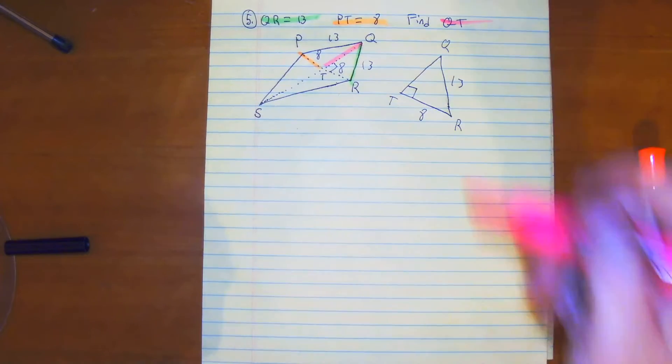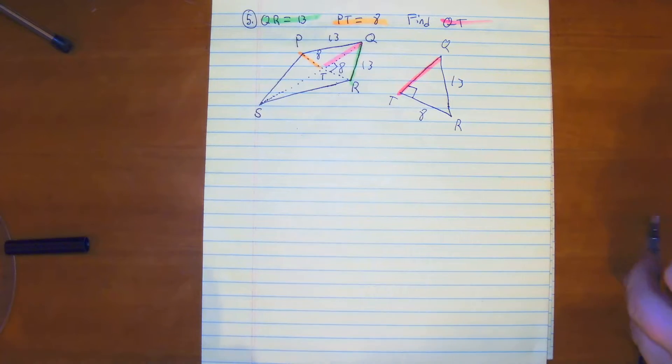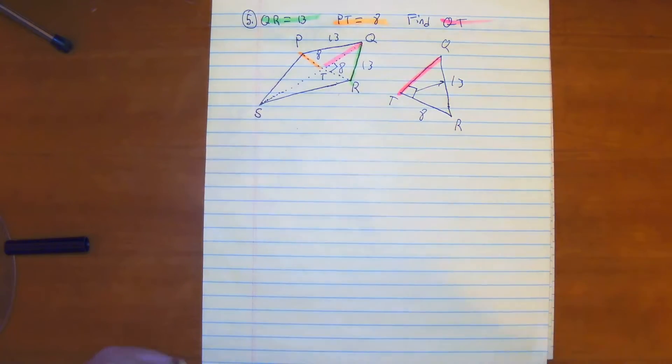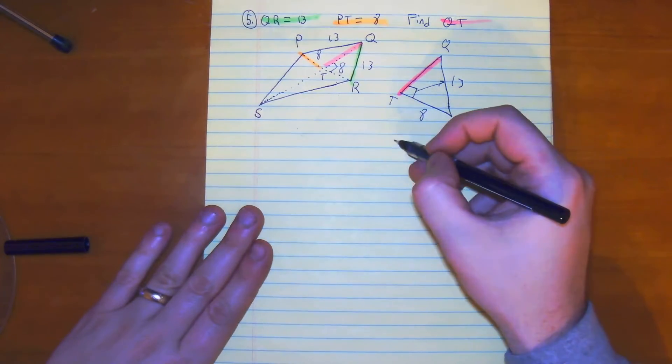But we do not know the value of QT. I draw an arrow from the right angle. My c is 13, so we have to use the Pythagorean theorem.